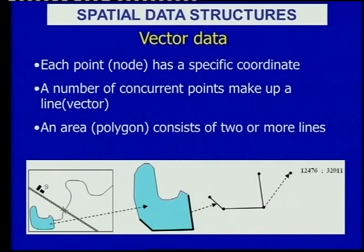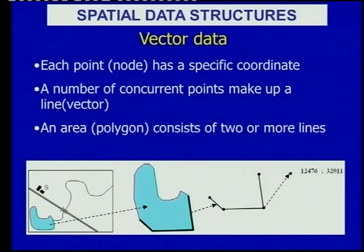Looking at the vector data structure: each point or node has a specific coordinate. A number of concurrent points make up a line or vector, and an area — the polygon — consists of two or more lines. In the example at the bottom right, we see a single node which is part of a set of four nodes that make up a line or arc. The area or object is made up by two different lines — a thin line and a thick line — which join up to make our polygon. In this case, that polygon is our dam.